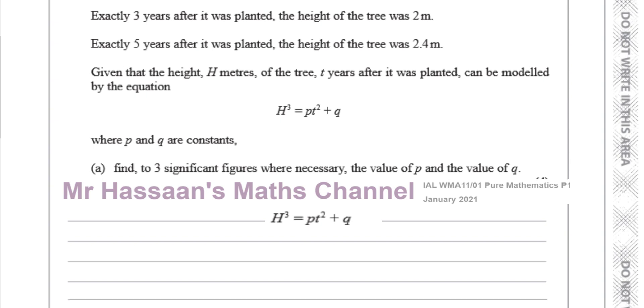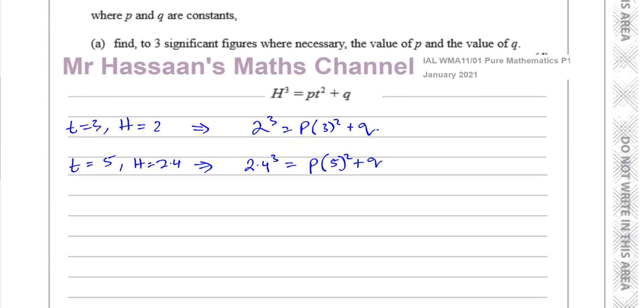Okay, so let's just take our values. This is the equation, I just duplicated it here. And let's just write down what we know. So we know that when t equals 3, h equals 2. We can replace in the first instance h with 2, so you're going to get 2 cubed equals p times 3 squared plus q. And for the other situation, t equals 5, h equals 2.4, so you have 2.4 cubed equals p times 5 squared plus q. So we have two equations now which we can solve simultaneously.